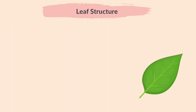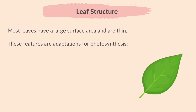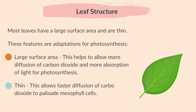Now let's look into the details of the structure of a leaf. Most leaves have a large surface area and are thin. These features are adaptations for photosynthesis. A large surface area allows more diffusion of carbon dioxide and more absorption of light for photosynthesis. The fact that it's thin allows faster diffusion of carbon dioxide to palisade mesophyll cells.